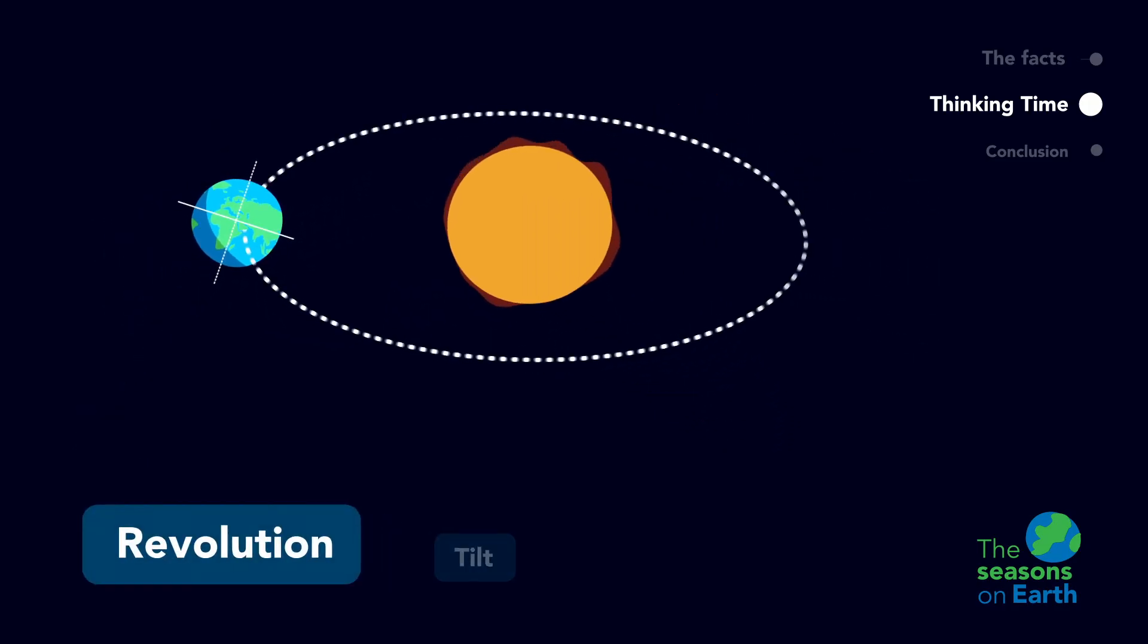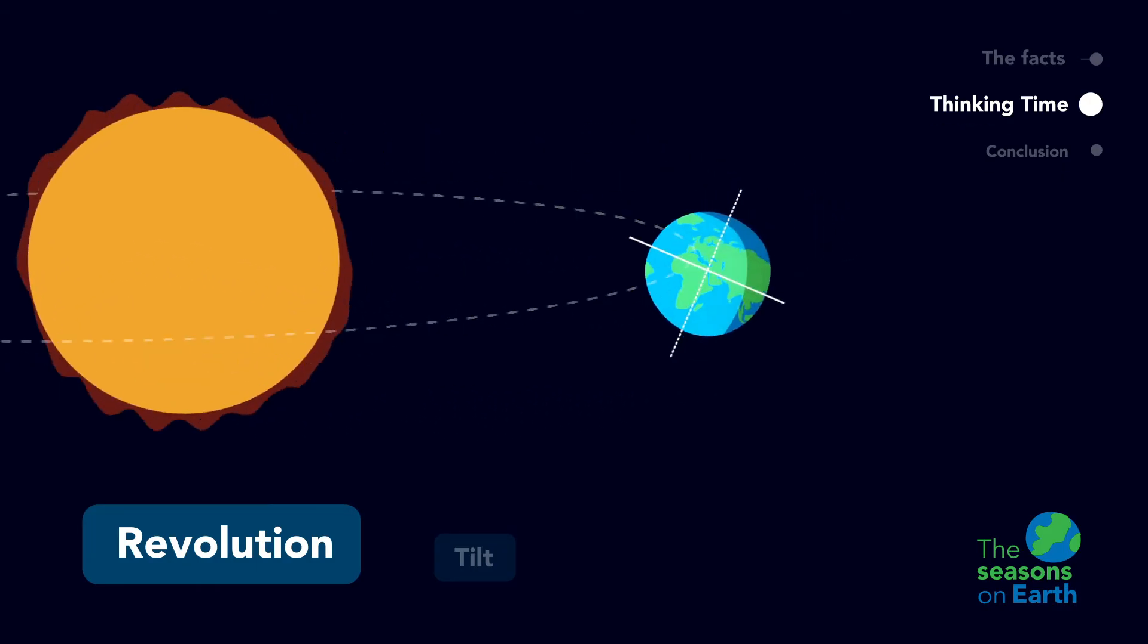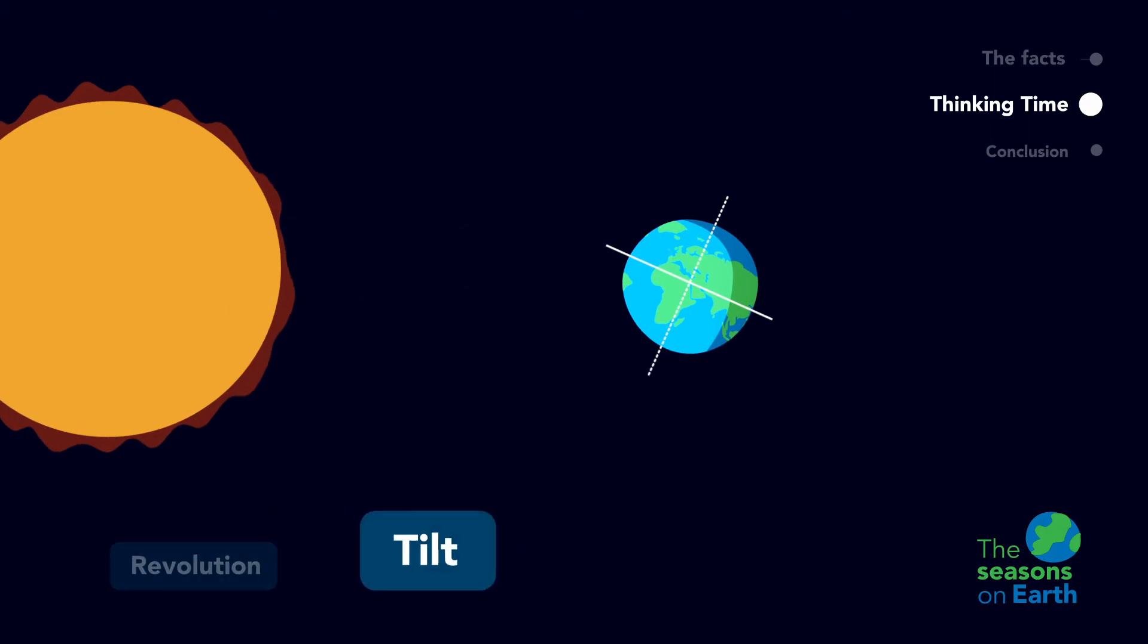Now, over the next six months, the earth will revolve to the other side of the sun. Even though the earth has moved, its tilt has stayed the same. This means the southern hemisphere is now tilting towards the sun, and the northern hemisphere is tilting away.